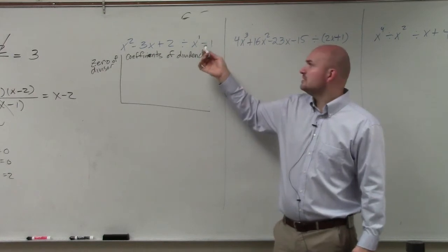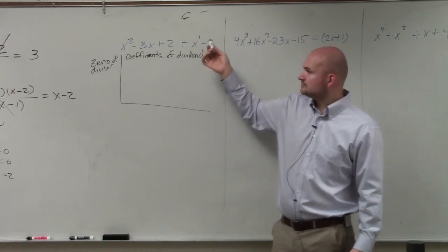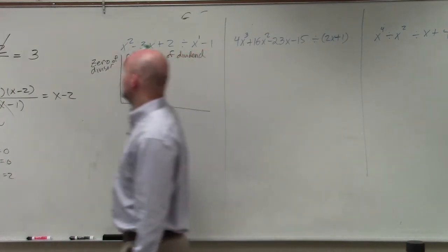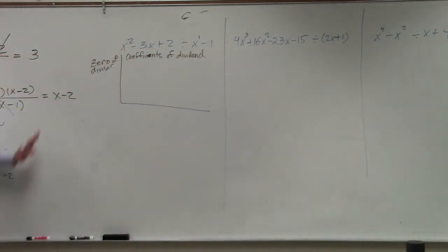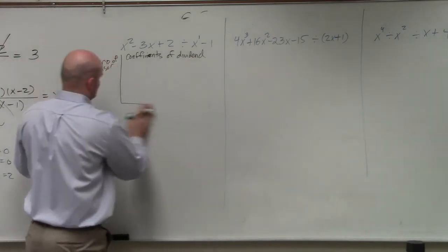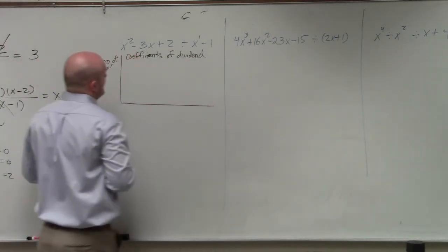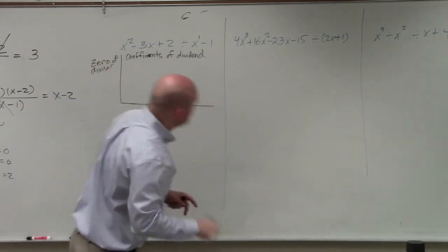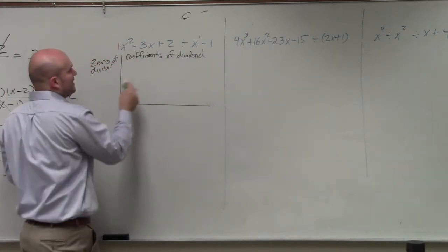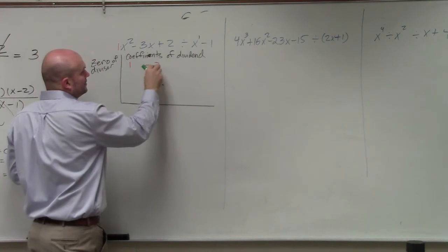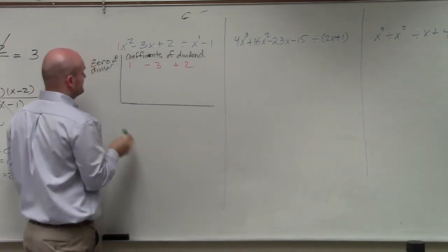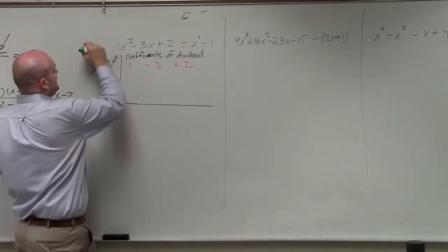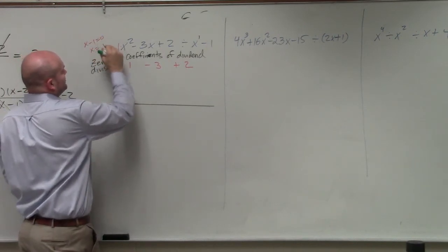Now, we already know the answer to this, right? We already know the answer of this zero is going to be x minus 2. So what we're going to do is we'll take the coefficients. There's a 1 there. So we'll write 1, negative 3, positive 2. The zero is going to be x minus 1 equals 0. So therefore, x equals 1. Does everybody see how I set this up?